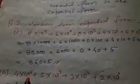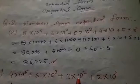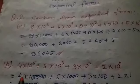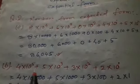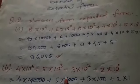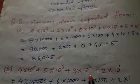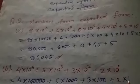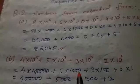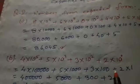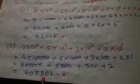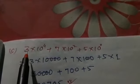The second problem is 4 × 10 to the power 5 plus 5 × 10 to the power 3 plus 3 × 10 squared plus 2 × 10 to the power 0. After simplifying and writing in place value order — lakhs, ten thousands, thousands, hundreds, tens, ones — we find four lakhs, five thousand, three hundred, two. The answer is 4,53,302.